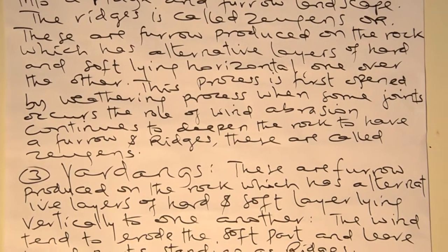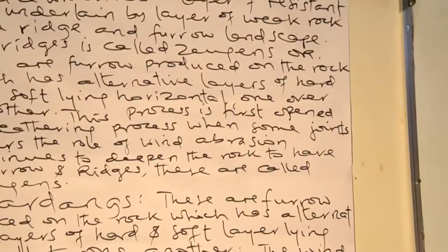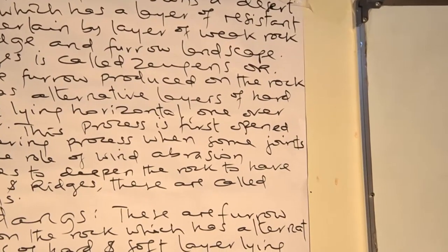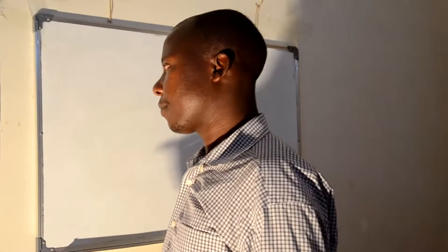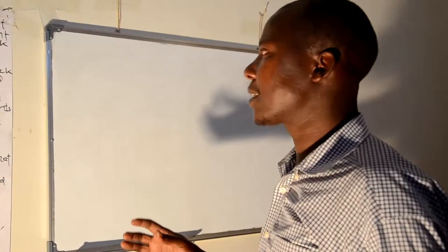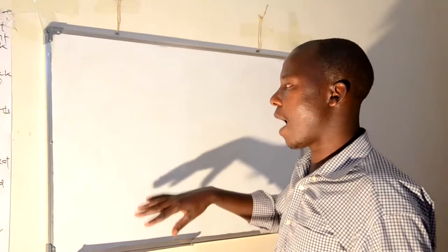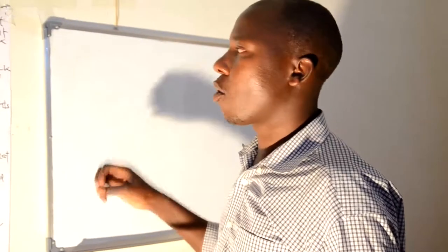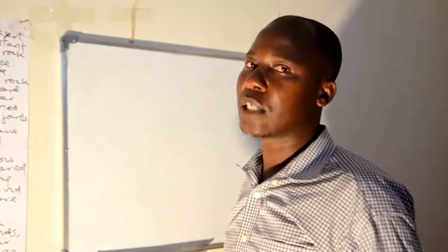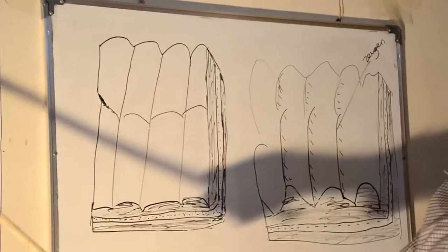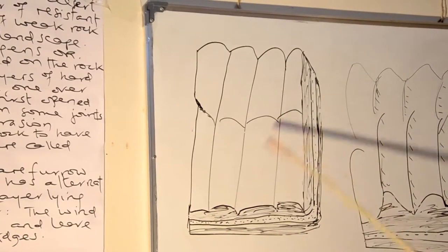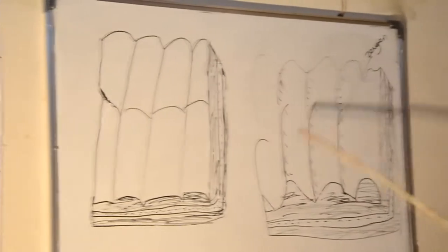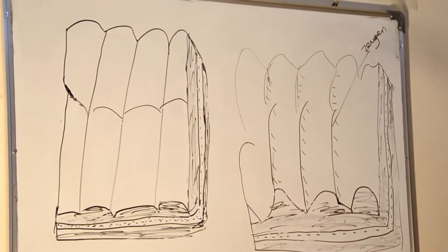The term Zeugen refers to the upland ridge area that remains after wind action erodes the softer surrounding parts. Some parts are affected and become depressions, while other parts remain standing upright. The area of the landmass which is uplifted and remains standing is called Zeugen. This is illustrated in stages — the first stage is the original landmass, and after erosion, the structure develops into ridges and furrows.